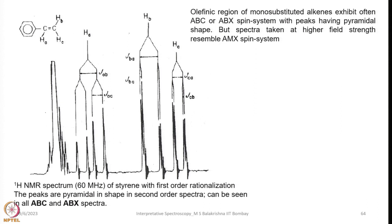This is the spectrum of styrene recorded at 60 megahertz. You can see the peaks are a little different compared to what we see when the same spectrum is recorded at higher field. Here you can see some sort of pyramidal effect. Pyramidal effect means when you see multiplets of different lines in a pyramidal shape, with increasing intensity on both sides resulting in a tower type appearance. That is called pyramidal, and it gives you a hint that this is not a simple first order spectrum — this is a second order spectrum.